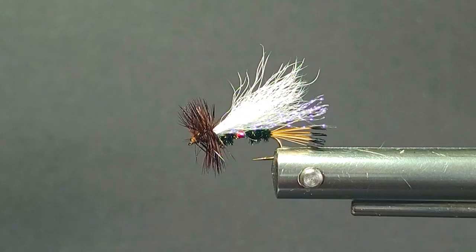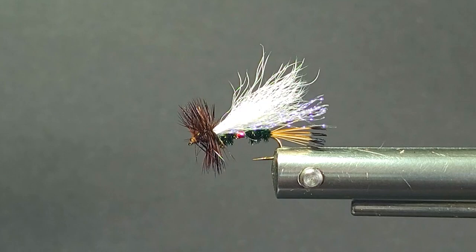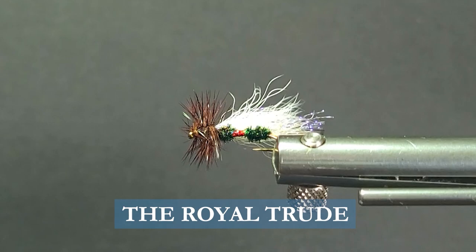Good day everyone and welcome to another segment on the bench. Here today I'm going to tie up a real pretty little fly. I always like tying these Royal Patterns. Here is a Royal Trude. It's a fly that not only looks good, but fish like eating it too. It's a great fly. Let's go over the materials we need to tie the fly.